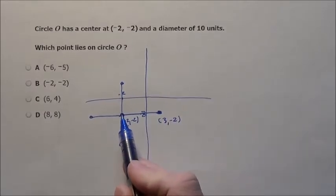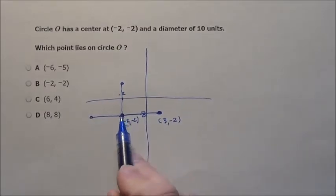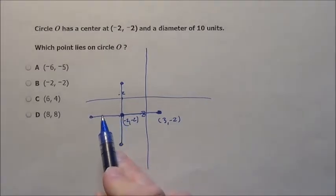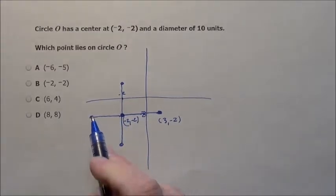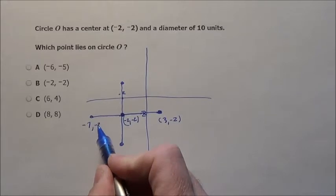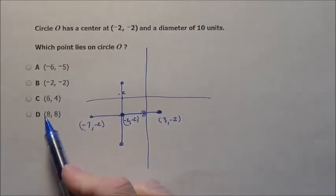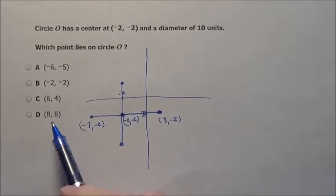Let's see if they went maybe to the left. To the left, if you are at negative 2 and you go to the left 5 units, you are going to be at negative 7, negative 2. Is that one of our options? No, that's not one of our options.